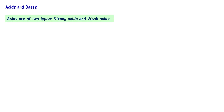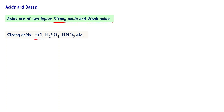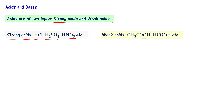We know acids are of two types: strong acids and weak acids. For example, HCl, H2SO4, HNO3, etc. — these are strong acids. There are also weak acids: acetic acid, formic acid, and a few more acids.